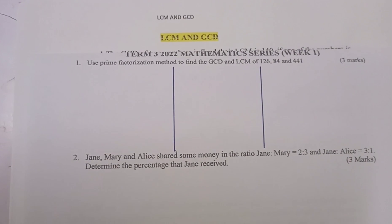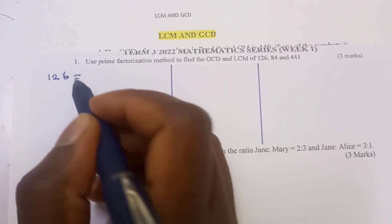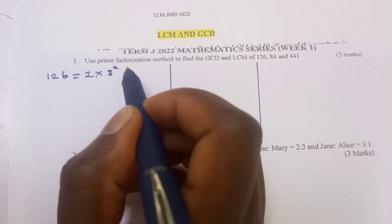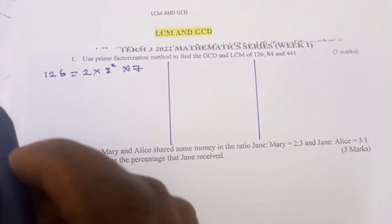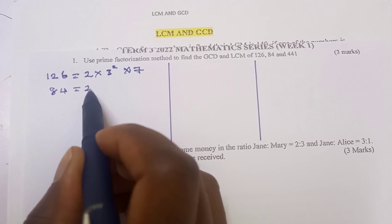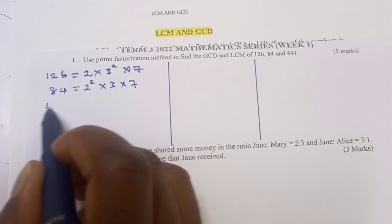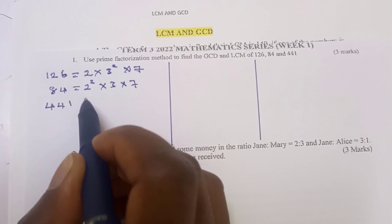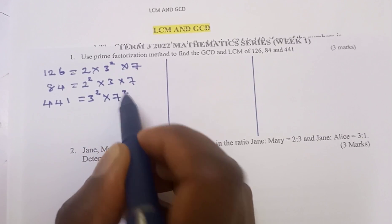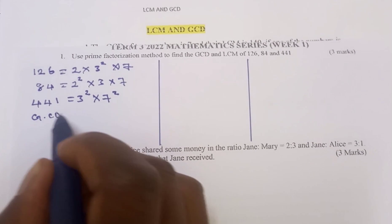We need to find the GCD and LCM of 126, 84, and 441. We are supposed to factorize each and every number. The factors of 126 are 2 × 3² × 7. The factors of 84 are 2² × 3 × 7. The factors of 441 are 3² × 7². So we first factorize those numbers as shown.